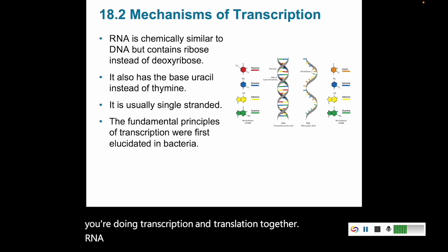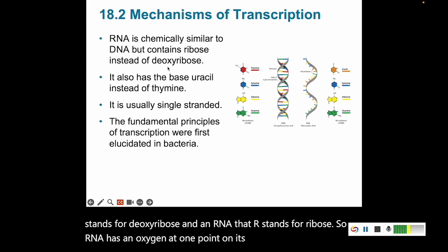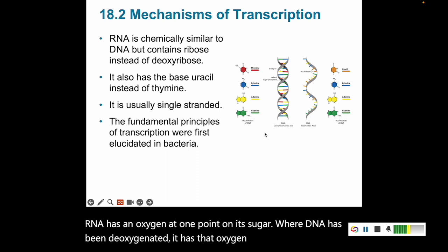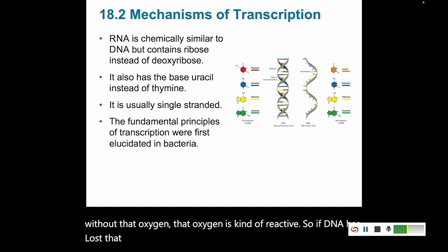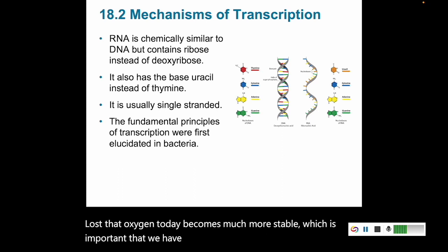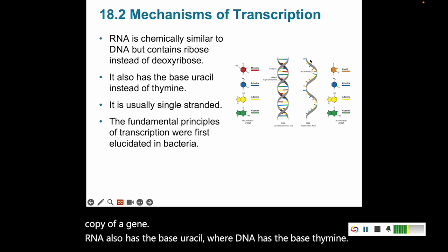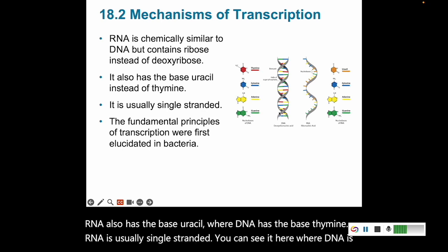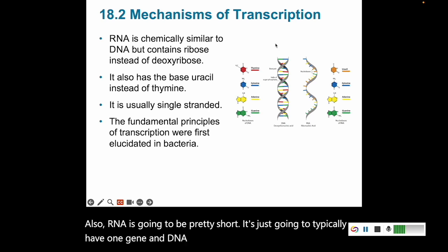RNA is really similar to DNA — both are made of nucleotides — but there are some differences. In DNA, the D stands for deoxyribose; in RNA, the R stands for ribose. RNA has an oxygen at one point on its sugar where DNA has been deoxygenated — that oxygen has been removed. Without that oxygen, DNA becomes much more stable, which is important so that the DNA molecule can last for your lifetime, compared to RNA which is a short-term copy of a gene. RNA also has the base uracil where DNA has thymine. RNA is usually single-stranded where DNA is a double-stranded helix. Also, RNA is typically short, covering just one gene, while DNA is very long, holding a chromosome's worth of genes.